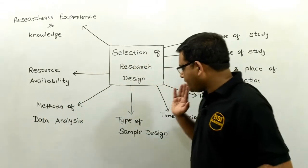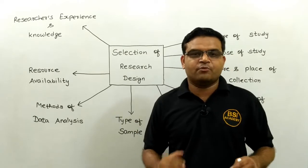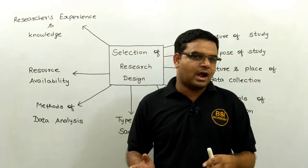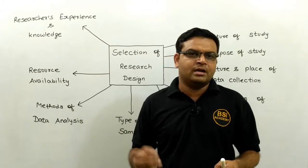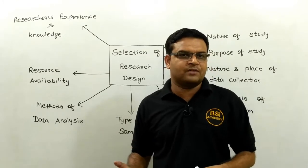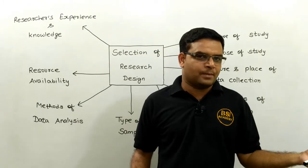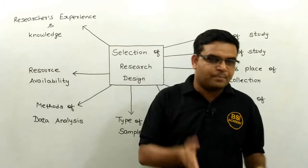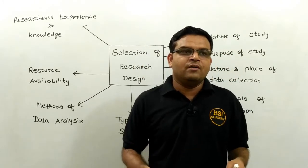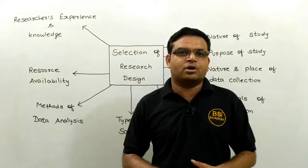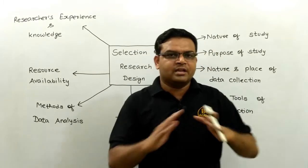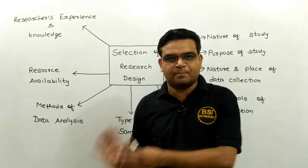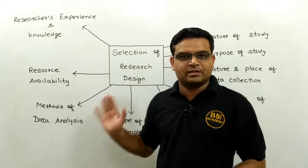The next criterion is the type of sample design. In layman terms, we have around two to three types of sample design — for example, probabilistic type of sample design, non-probabilistic type, or statistical sample design. The type of sample design plays a very important role, and also the type of study population matters. For example, if we are doing research on 10,000 people, we will collect a sample design that represents those 10,000 people. Sample design plays a very important role in research design.